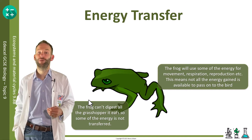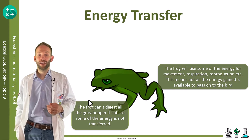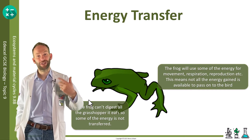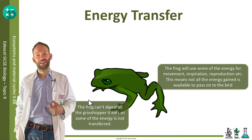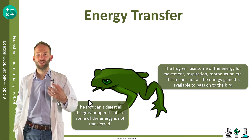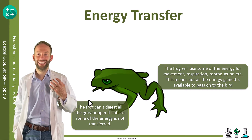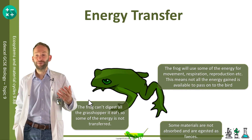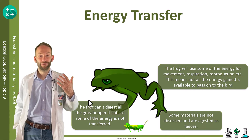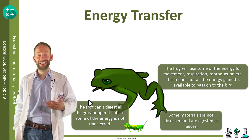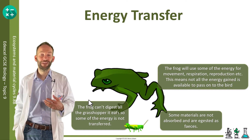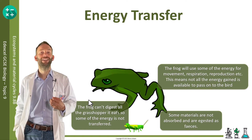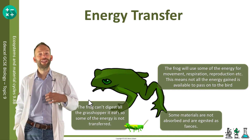It's not going to get all that biomass and store it as new biomass. The frog will also use some of the energy it gets for movement, respiration, and reproduction, meaning not all the energy it gains can be passed on. Some materials are not even absorbed and are just egested as feces, so again it's not storing that energy.